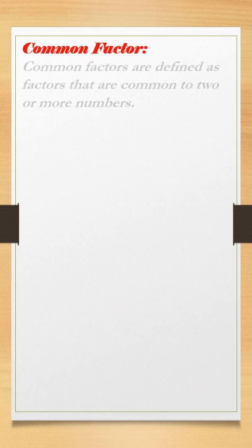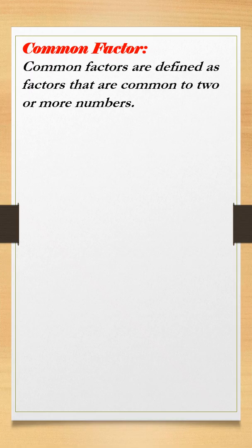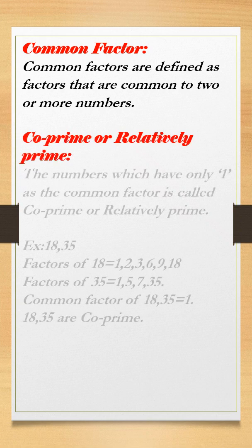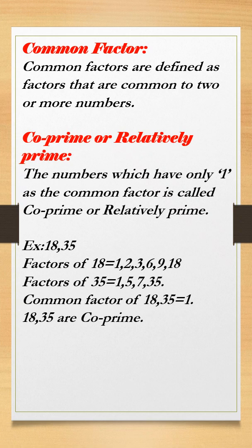Common factors are defined as factors that are common to two or more numbers. If you have to find out the factors of any two or more numbers, which factors have the same numbers as a factor, then that same number is called a common factor.